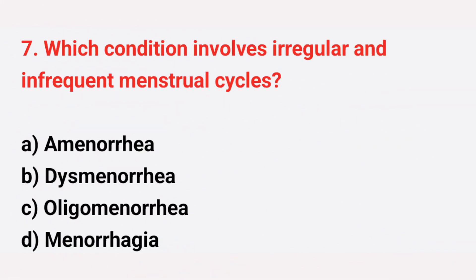Question number 7: Which condition involves irregular and infrequent menstrual cycles? The right answer is option C, oligomenorrhea.